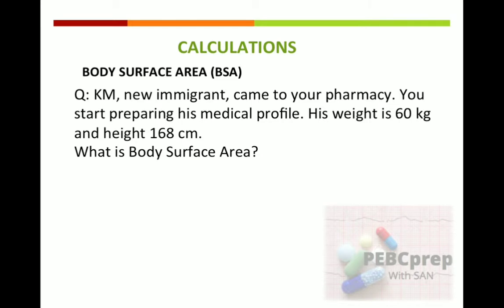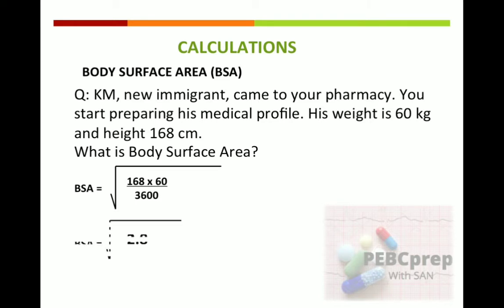To find the body surface area, apply the formula: 168 centimeters (height) multiplied by 60 kilograms (weight), divided by 3600. When you solve the values, the answer will be 2.8. Now apply the square root, and when you calculate on your calculator the final answer will be 1.673 meter square.